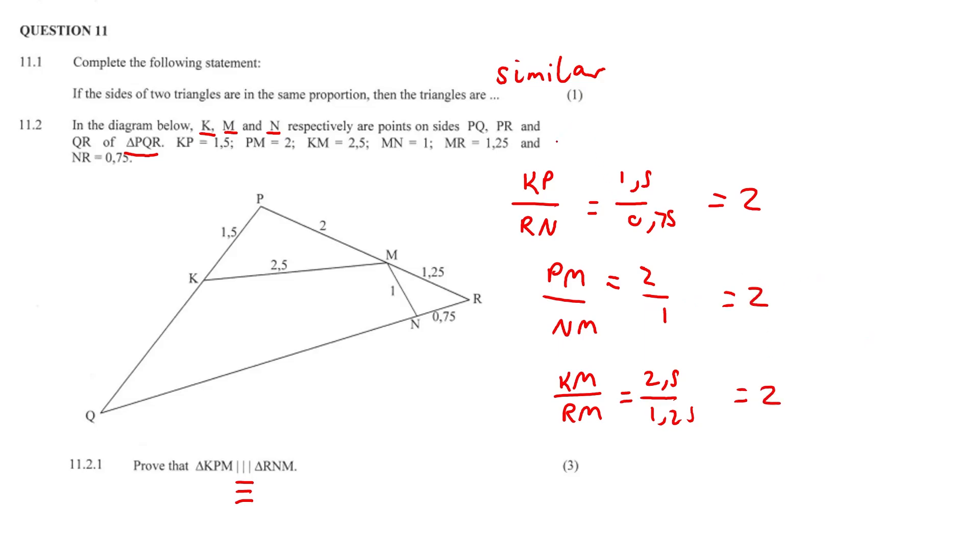And you get 2, 2, 2. That means this is in proportion to this, which is in proportion to this. All of these are equal to each other.